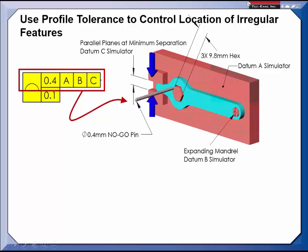The datum reference frame is indicated in the feature control frame, and the gauge contains datum feature simulators for datums A, B, and C.